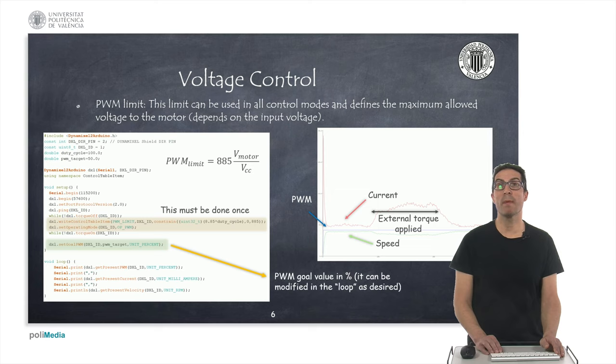In voltage control mode we must specify a reference voltage or PWM goal. We can define a maximum value for the PWM signal if the motor supports a voltage lower than the power supply voltage. Here I show the code that we can use to perform a PWM control. The set goal PWM function allows to set the reference value and it can be indicated as a percentage.